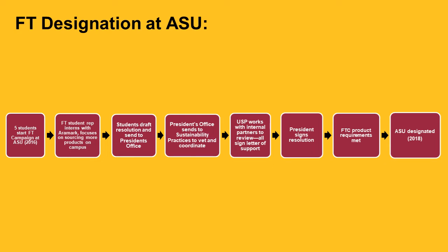Partners were really happy to sign off because Fair Trade values align with what we value at ASU, and also because the students had done a lot of the coordination and legwork in reaching out to the right partners. A key takeaway: if you know the key partners that will be influential in making things happen, reach out to them early and start the conversation early. The president's office was really willing to sign off because we'd done our due diligence and our major campus partners were already advocates. Reach out early and keep that communication going as you move through the process.